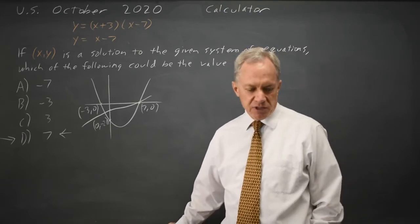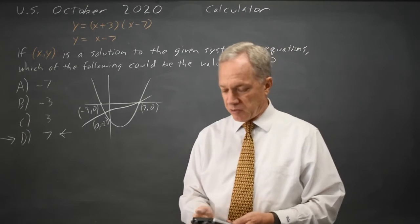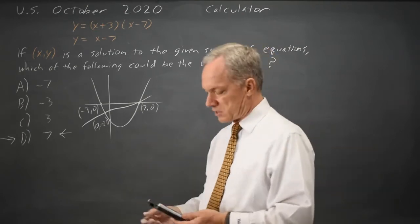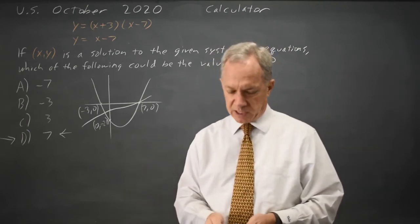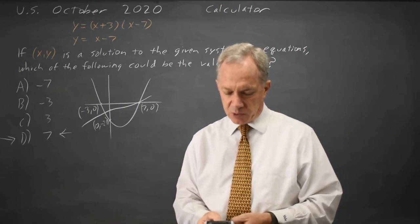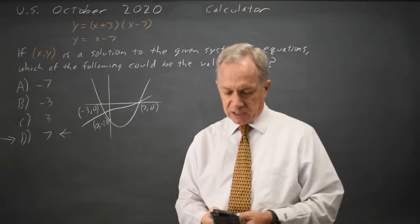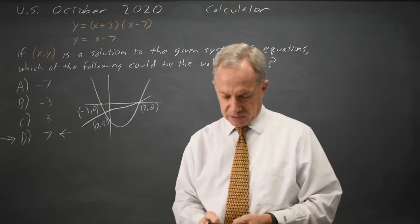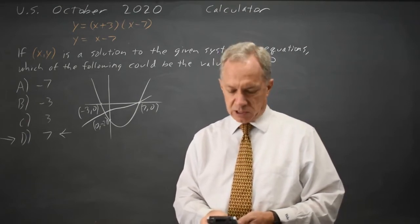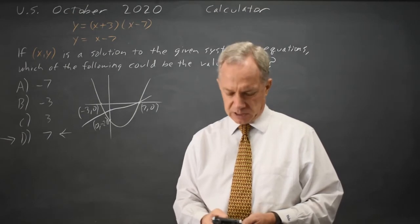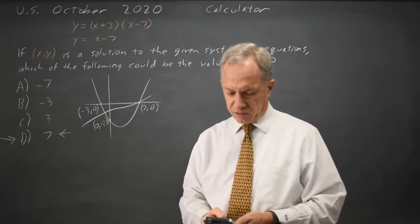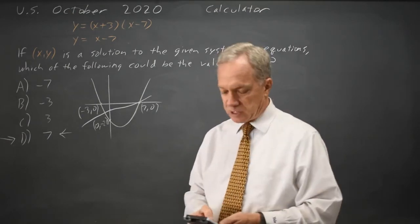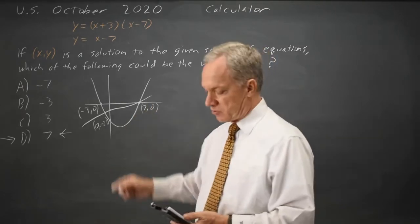I can graph this on my graphing calculator. If you have a graphing calculator, as you see, it's not necessary because we should be able to graph this by hand. If I go to y equals and put x plus 3, x minus 7 in y1, and x minus 7 in y2, I'm going to go to the standard window, zoom 6, and the graph looks somewhat like what I just drew, except their line is, of course, straighter.